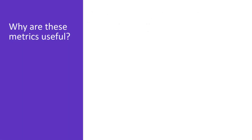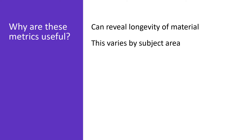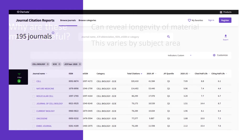Cited half-life can provide a sense of the longevity of the material in a journal — is older material still being cited? This can vary by field, as some fields change and evolve more quickly than others. View a complete category to see these metrics in context.